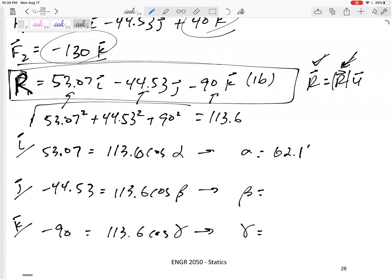Now remember, positive components should be acute angles and negative components should be obtuse angles. Also, the closer it is to 90 degrees, the smaller the component, or let me say that backwards, the smaller the component, the closer your coordinate direction angle should be to 90 degrees.